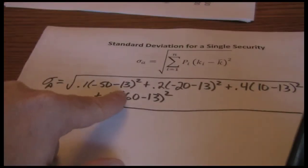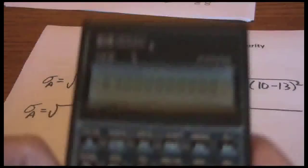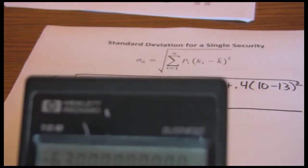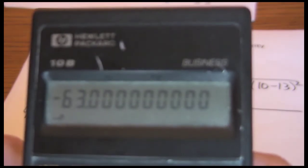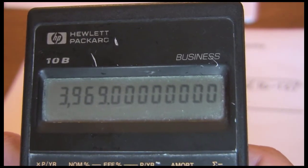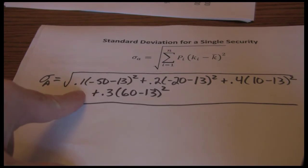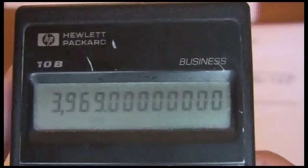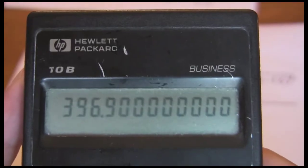Gives us negative sixty three. Then we want to square that. And lastly, we want to multiply by the probability .1. So that gives us 396.9.